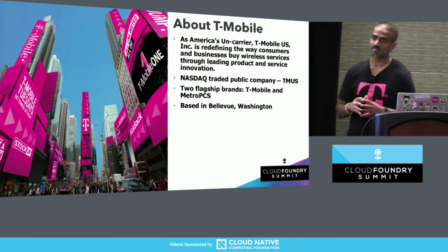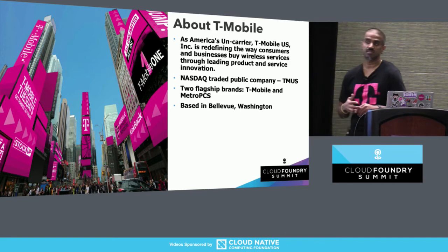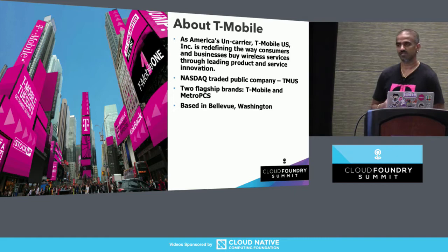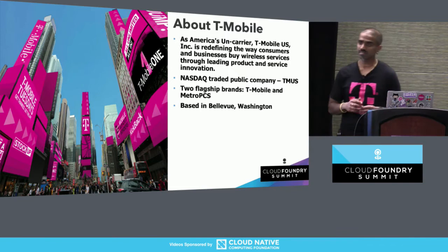I'll talk a little bit about the company I work for — just two slides. We like to call ourselves Un-Carrier. We're based out of Bellevue, and we've been changing the industry since 2013 with innovative products and services, and changing how consumers and businesses buy wireless products. We're a publicly traded company with two flagship brands: T-Mobile and MetroPCS.